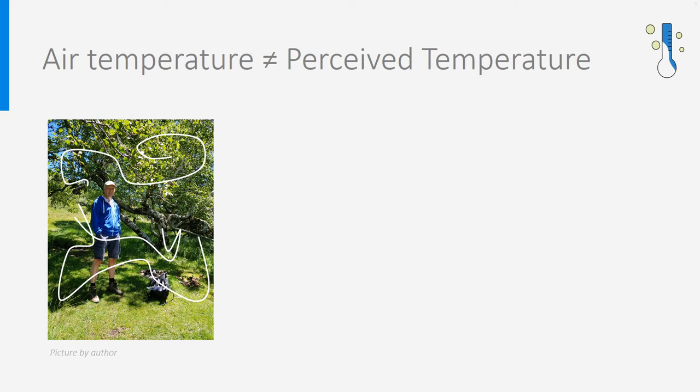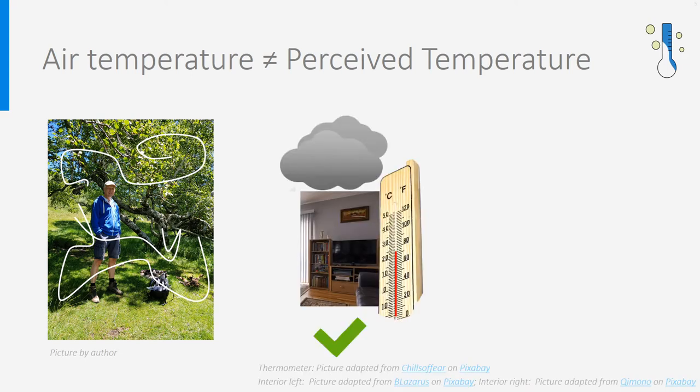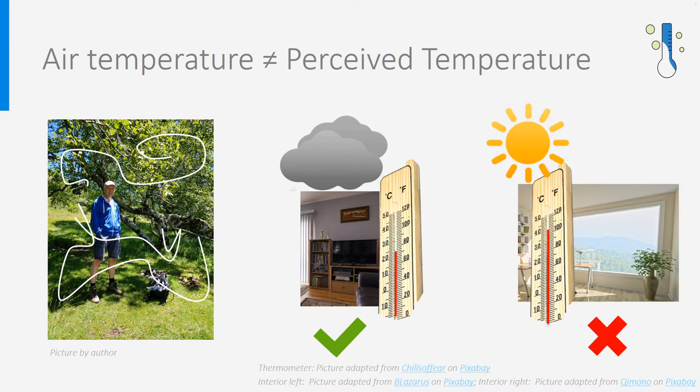The same happens with the thermometer. If you put it in the shadow and wait for a while, the thermometer material will take the temperature of the air, and so you will measure the air temperature. However, if you put it in the sun, the thermometer material will take a much higher temperature because it also absorbs solar radiation, so the temperature measured will have little to do with the actual air temperature. So, to measure air temperature, always put the thermometer in the shadow and far away from any additional source of temperature, like a radiator or the sun, that could influence the measurement. We will come back to that in a lecture about radiant heat.